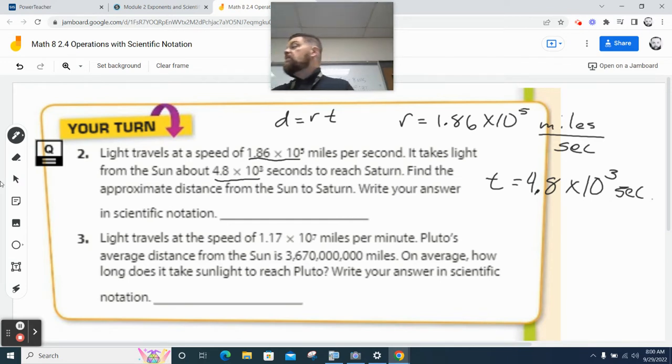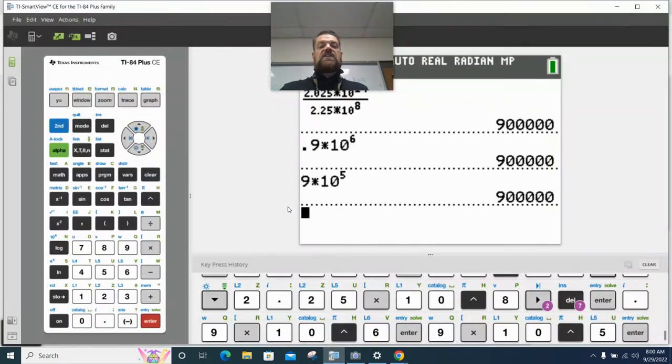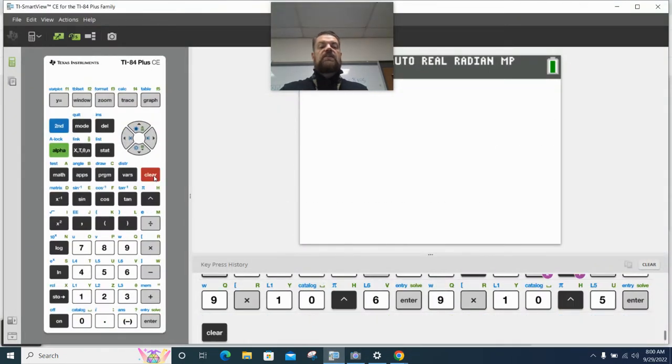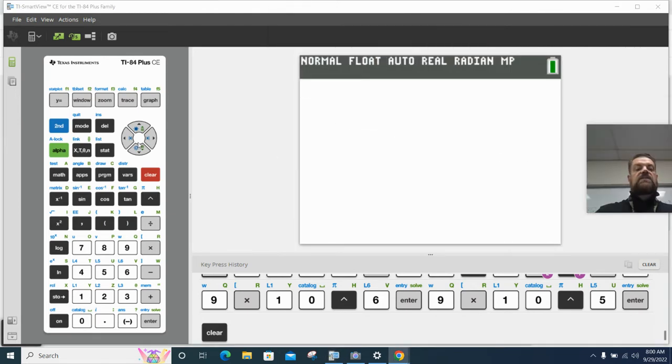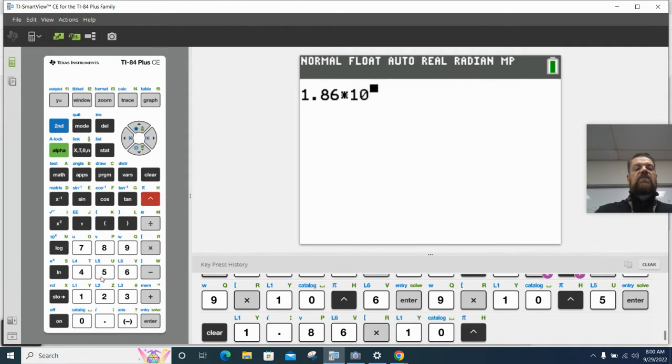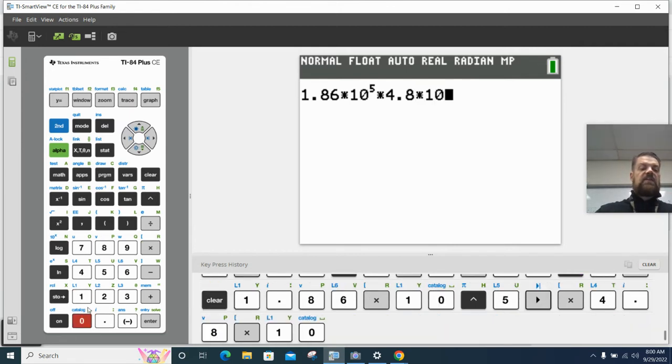Does everybody have a calculator? Can I get two volunteers? Come get them. Alright, so now we can do this pretty easy, but we just have to multiply these values together. So I'm going to take 1.86 times 10 raised to the 5th, and then I'm going to multiply it by 4.8 times 10 to the 3rd.